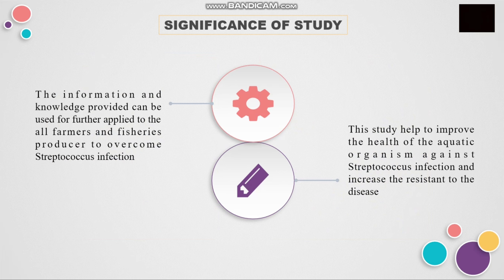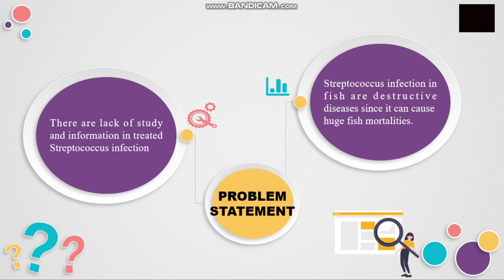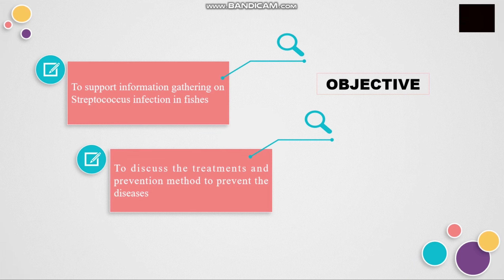The significance of this study is that the information and knowledge provided can be used by all farmers and fisheries producers to overcome Streptococcus infection. This study also helps to improve the health of aquatic organisms against Streptococcus infection and increase resistance to the disease. The problem statement is that there is a lack of study and information on treating Streptococcus infection, and it is a destructive disease causing huge fish mortalities. The objective is to support information gathering on Streptococcus infection in fish and to discuss treatments and prevention methods.